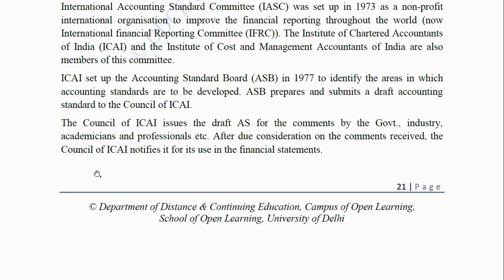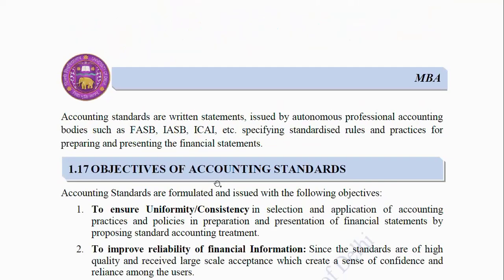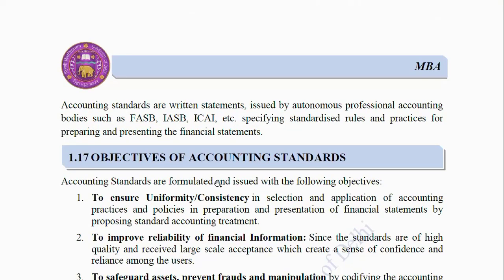ICAI set up the Accounting Standards Board (ASB) in 1977 to identify areas in which accounting standards are to be developed. The ASB prepares and submits a draft accounting standard. The Council of ICAI issues the draft AS for comments from the government, industry, academicians and professionals. After due consideration of comments received, the Council of ICAI notifies it for use in financial statements. Accounting Standards are written statements issued by autonomous professional accounting bodies such as FASB, IASB, ICAI, etc., specifying standardized rules and practices for preparing and presenting financial statements.